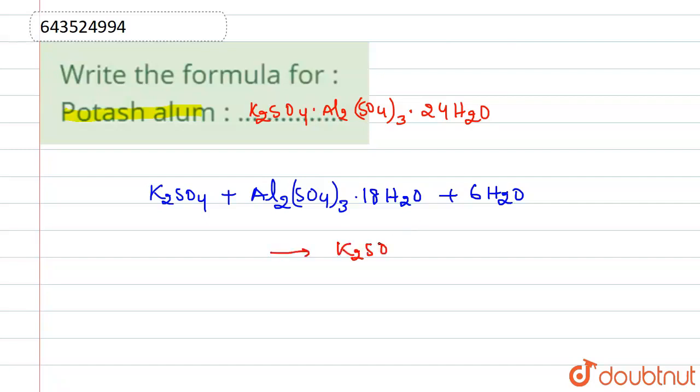K2SO4·Al2(SO4)3·24H2O. So this is our potash alum. Right, so thank you.